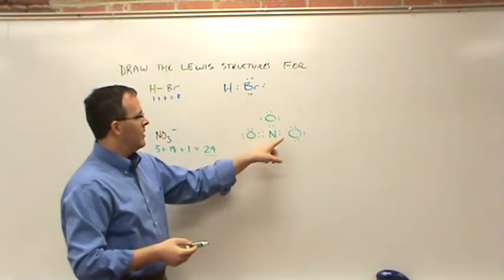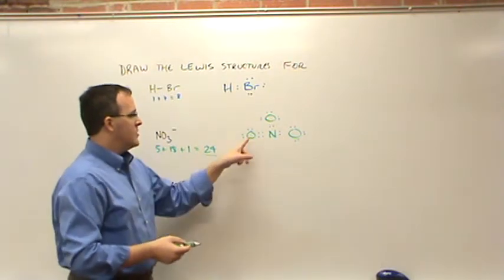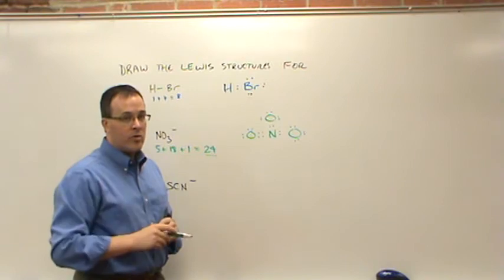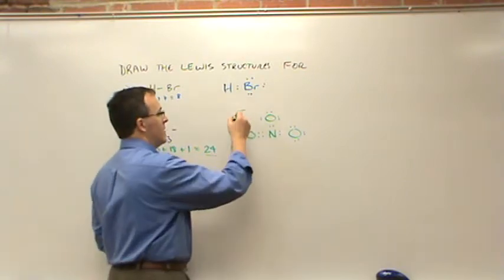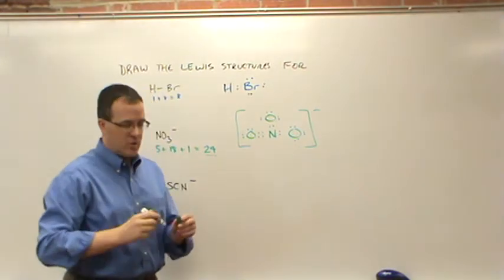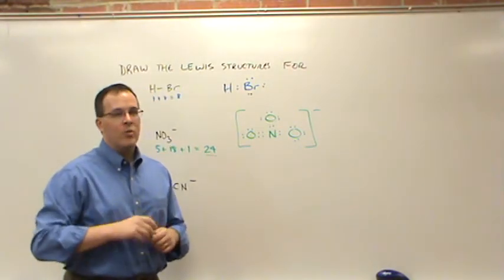There's eight around the N, eight around the O, and eight around the O. So our nitrate structure has a double bond in it. One more thing we've got to do to make this complete, and that is a bracket and a negative charge. Because we've got to show that that negative charge is present, we just don't know where.